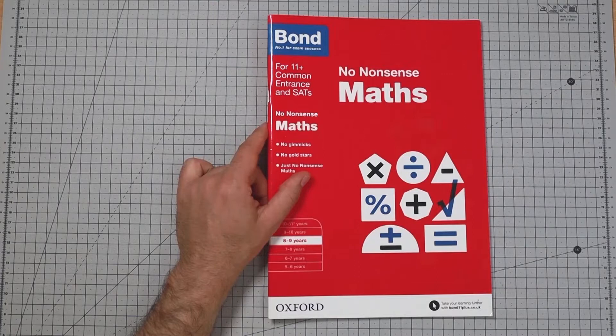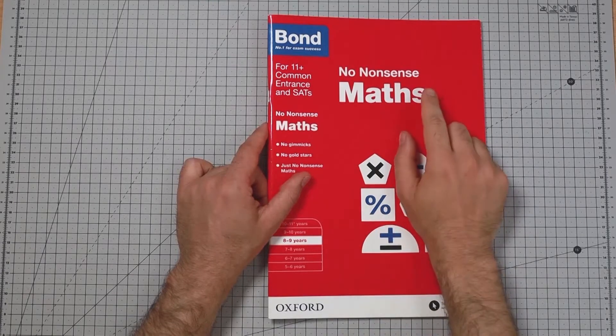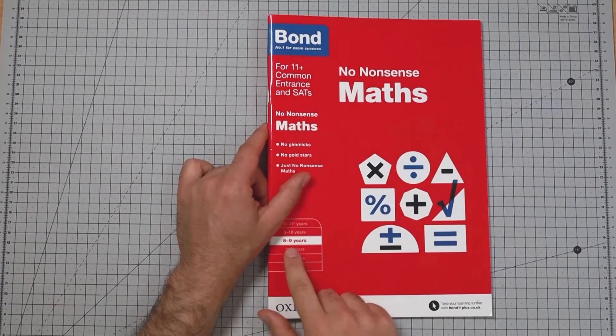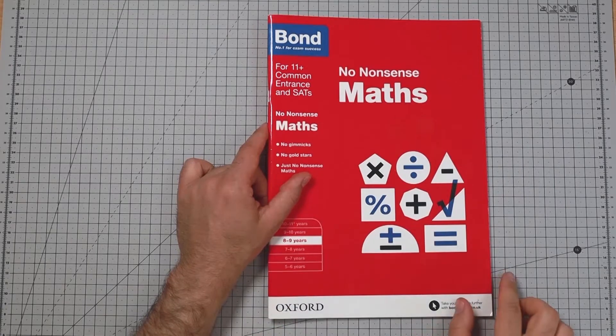Hello, Mr. Bond. Bond, no-nonsense math, 11 plus exam, 8 to 9 years.